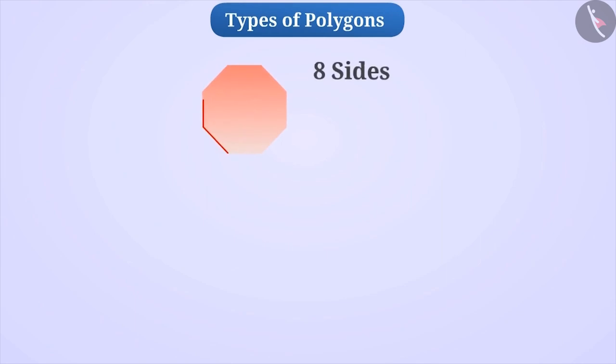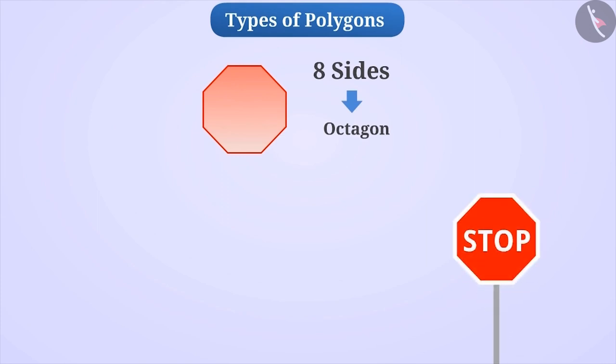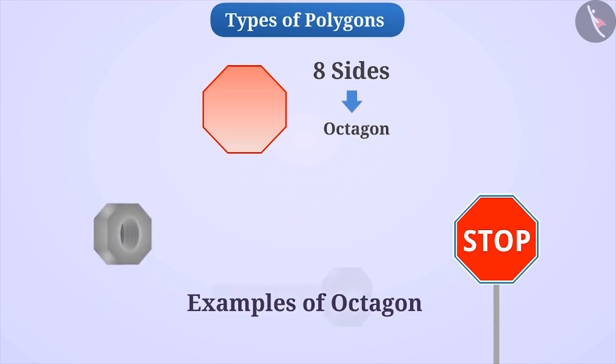If we talk about a polygon with eight sides, then we call it an octagon. You must have seen this sign on the road. Can you tell the number of sides on this polygon? Let me tell you. This sign is made up of eight sides. That is, it is an octagon. Similarly, some examples of an octagon are as follows.